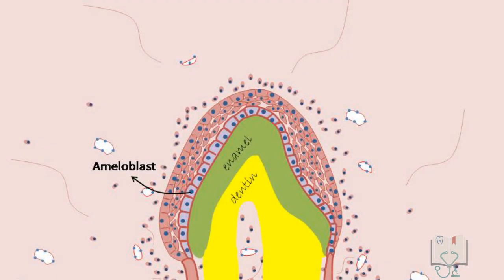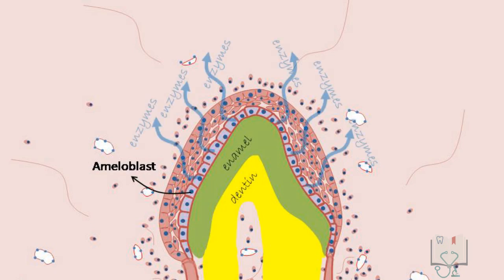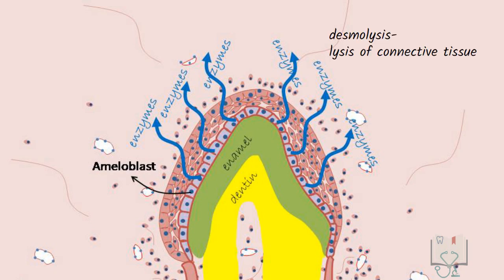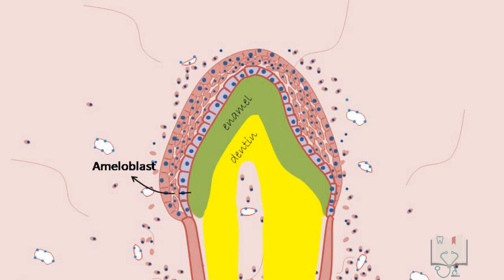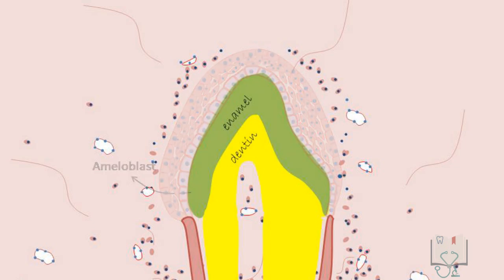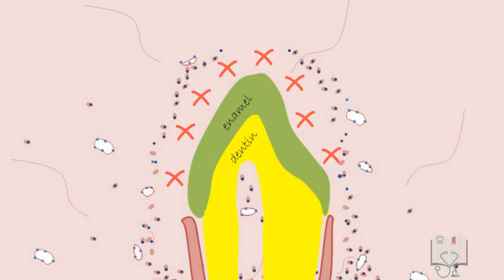Desmolytic stage: In addition to protecting the formed enamel, the reduced enamel epithelium releases enzymes into the surrounding connective tissue. These enzymes cause desmolysis, hence the desmolytic stage, and therefore help in the eruptive movements of the tooth. That is why premature loss of reduced enamel epithelium may prevent the eruptive forces of the tooth.